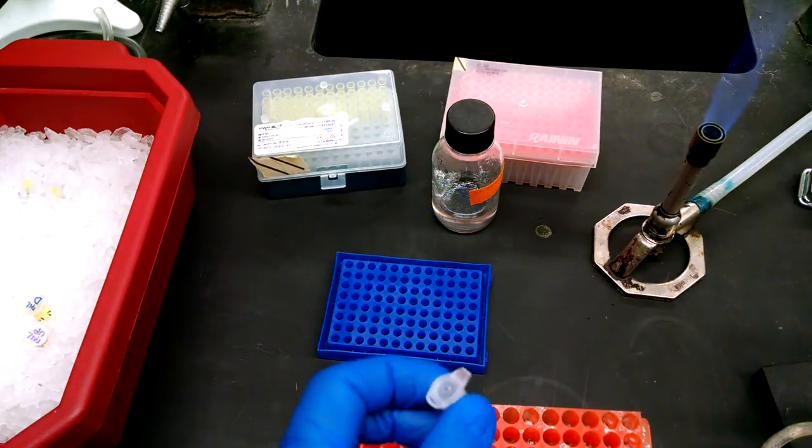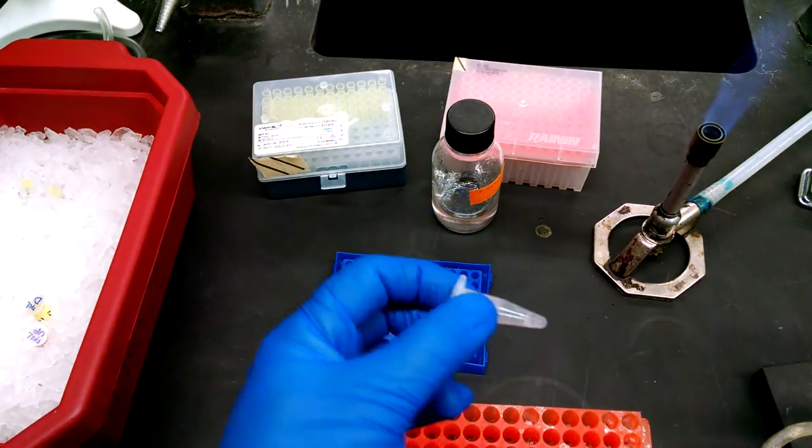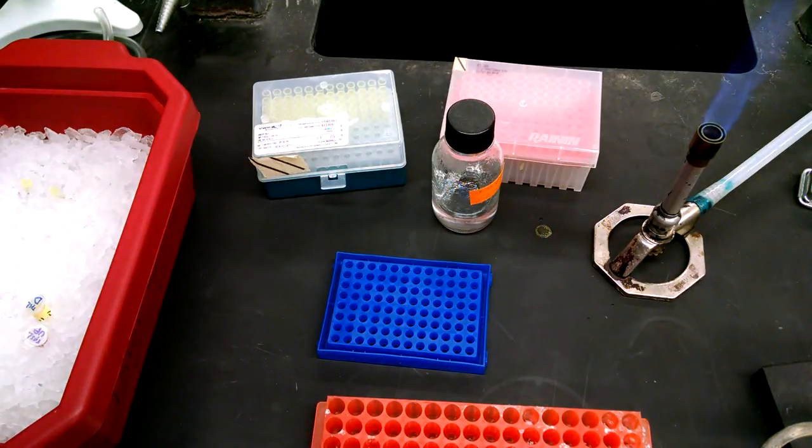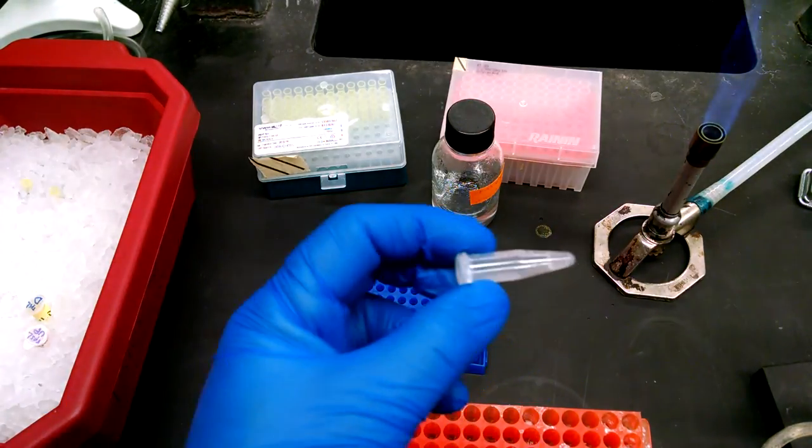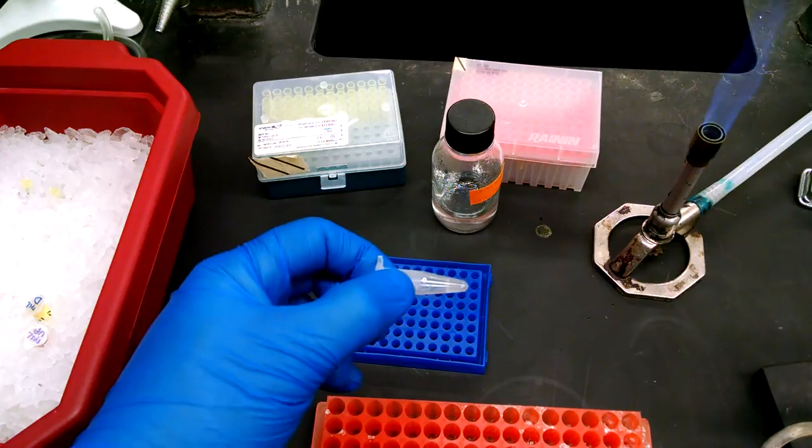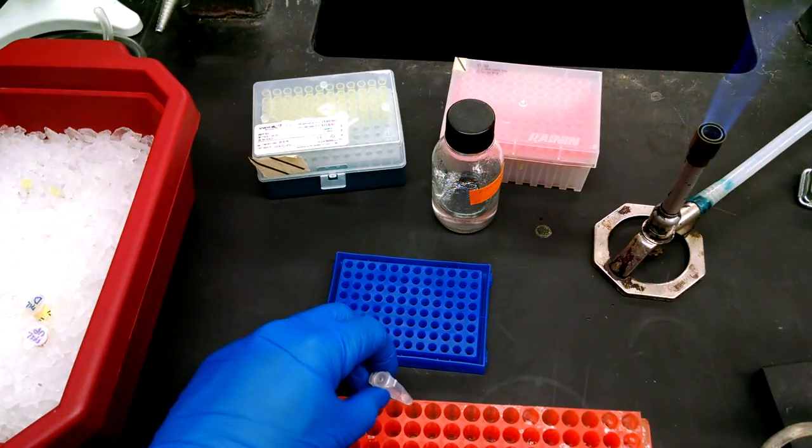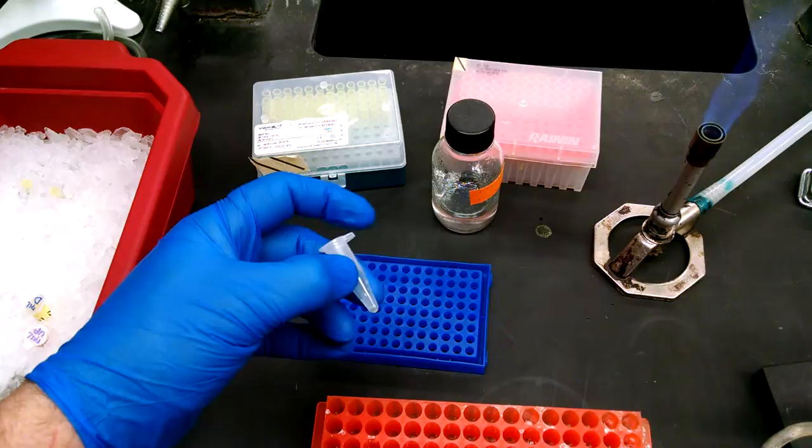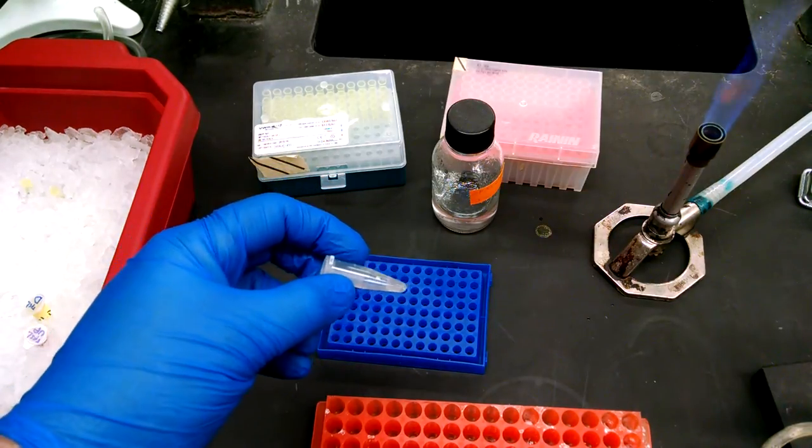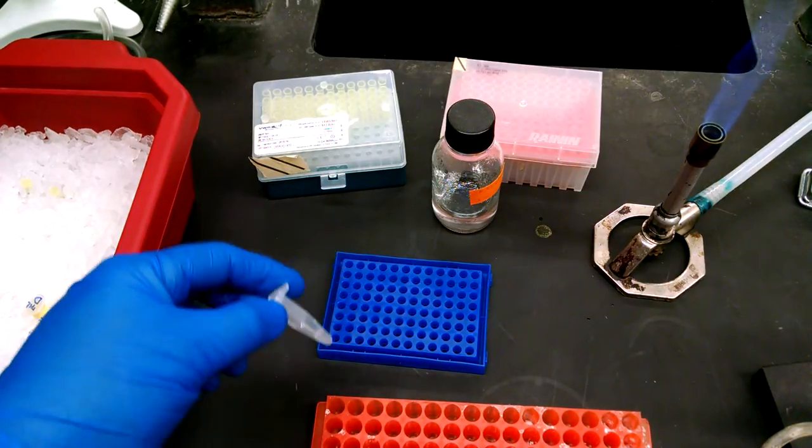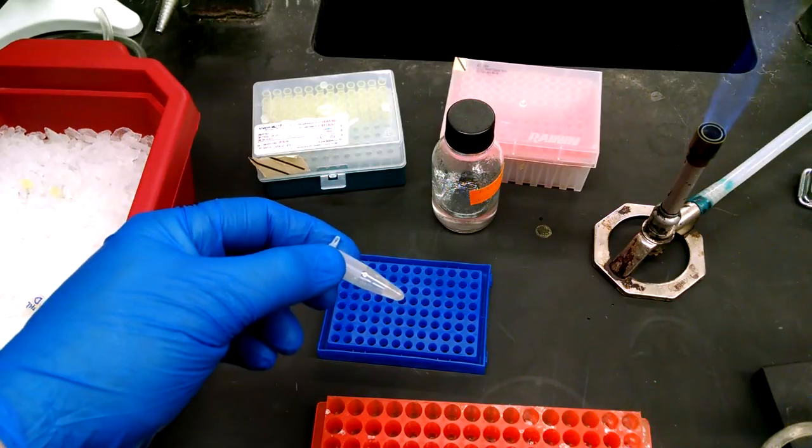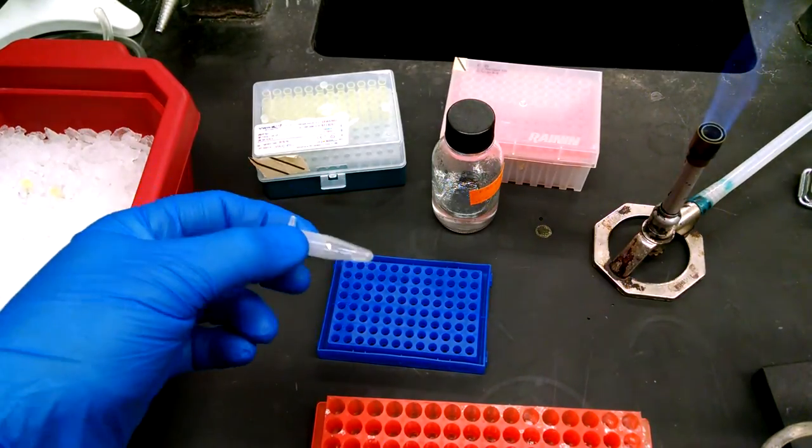And then you can do some vortexing of this as well. And so there's your template DNA, cells and water. And so remember, the first step of PCR is to heat up the sample up to almost boiling temperature. That's going to break open these cells and provide the DNA.